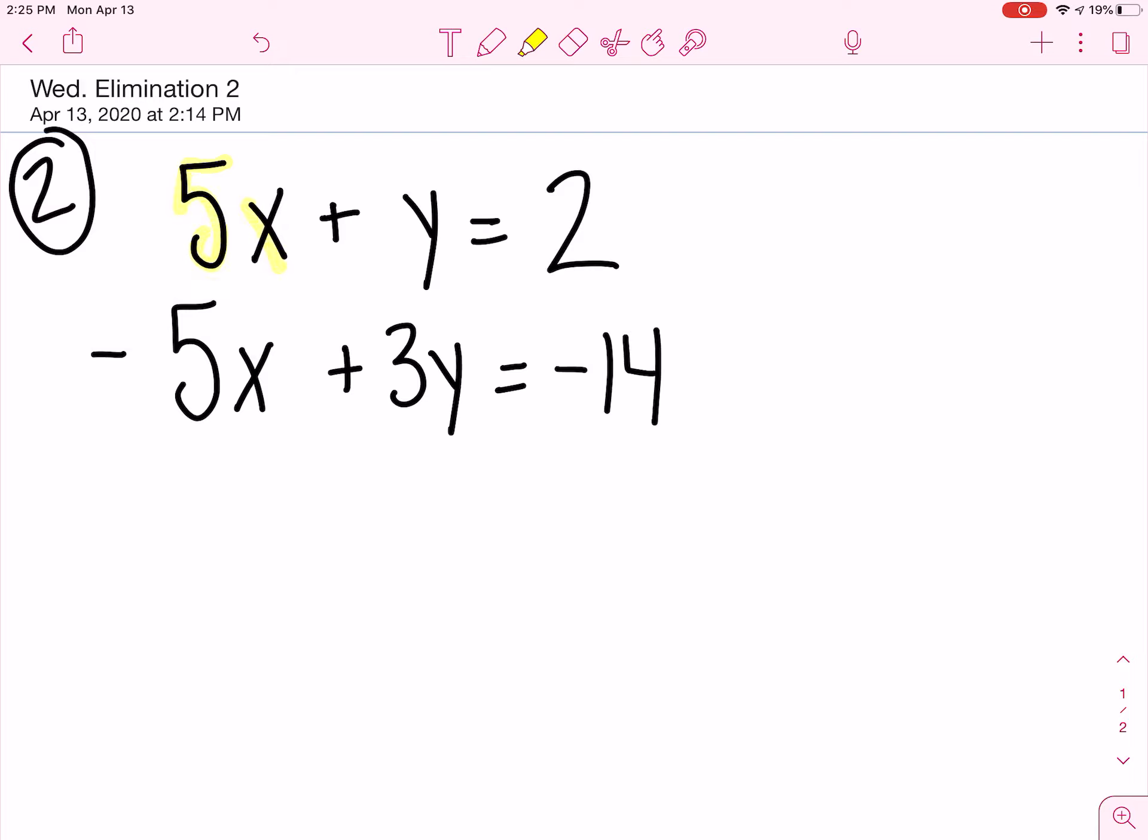Let's check our x's first. We have a positive 5x and a negative 5x. We already found our opposites, so we don't have to do that times negative 1. Therefore, I am ready to go add these two equations.